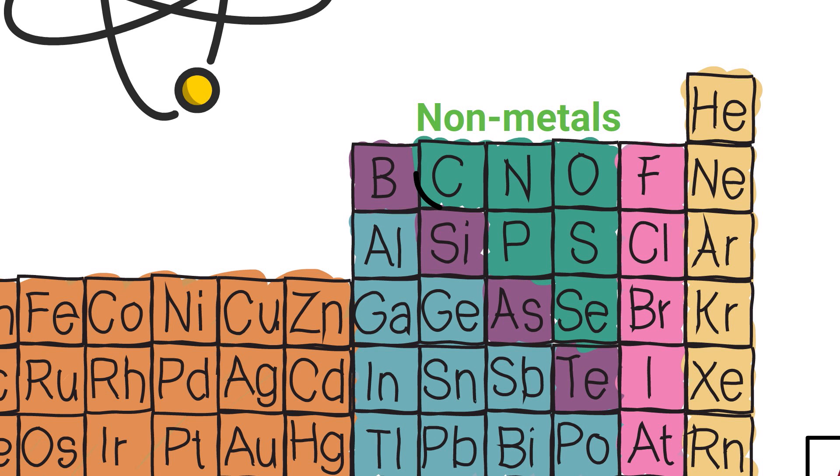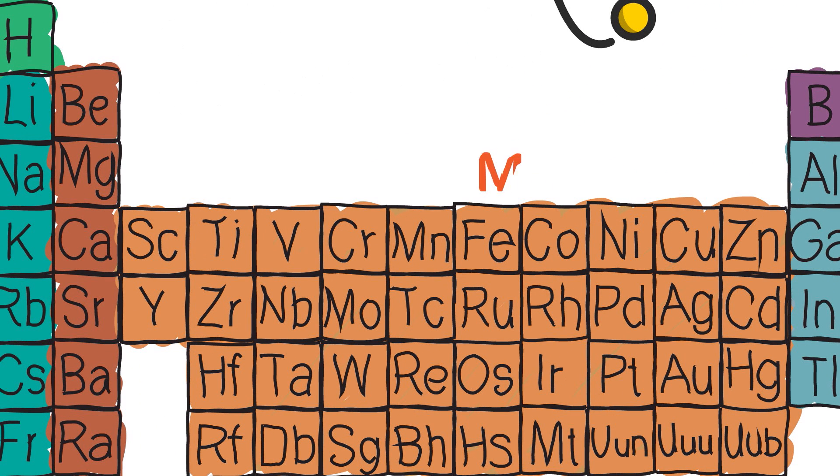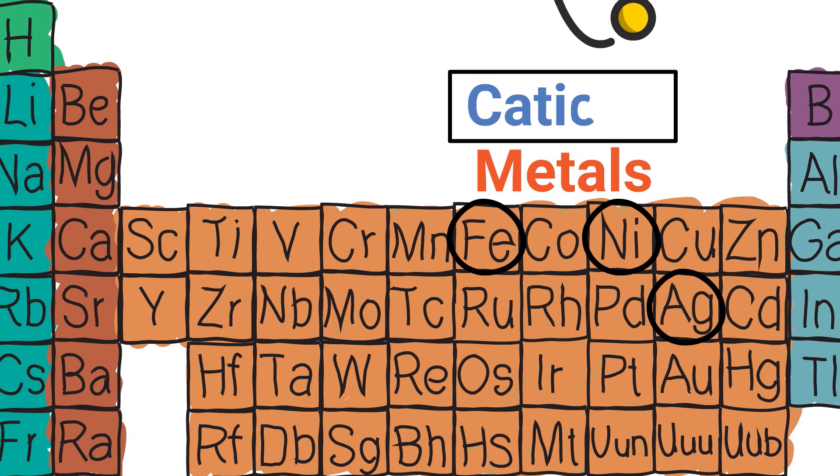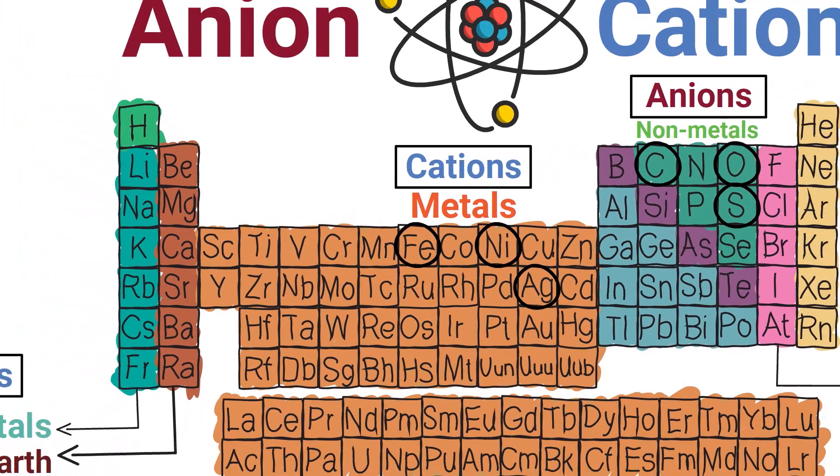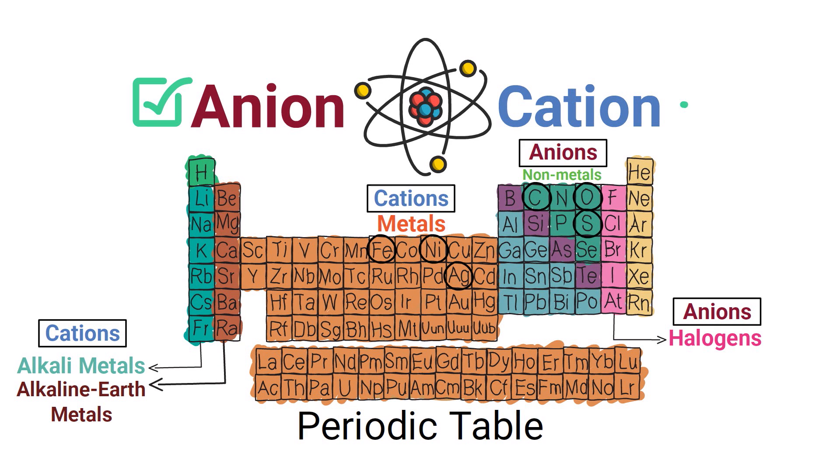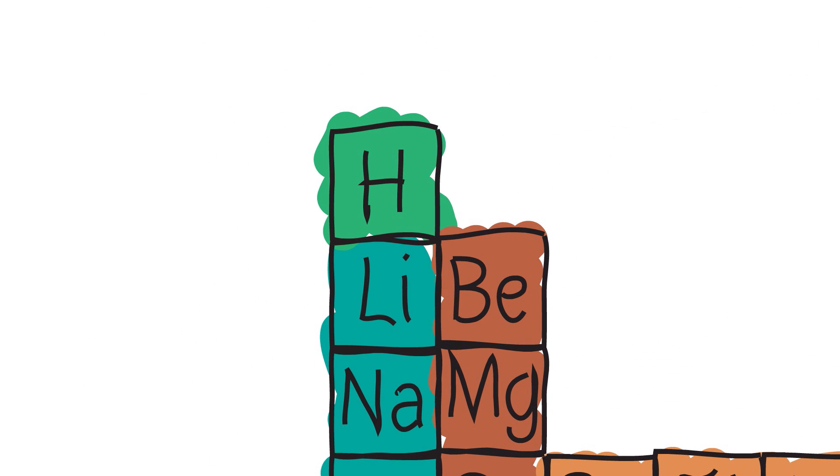Most non-metals such as carbon, oxygen and sulfur form anions, whereas most metals such as silver, iron and nickel typically form cations. Some elements are able to form both anions and cations under certain conditions.